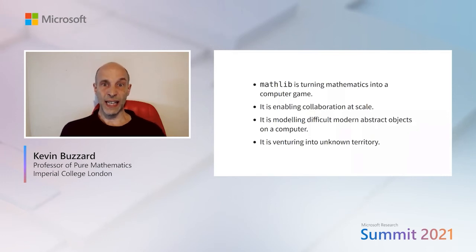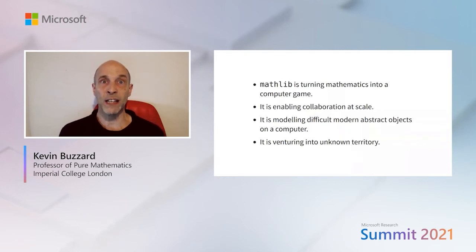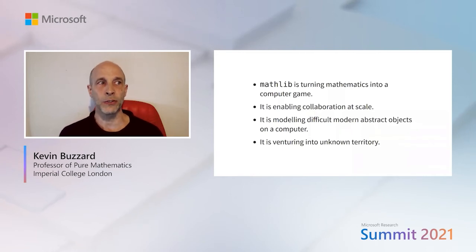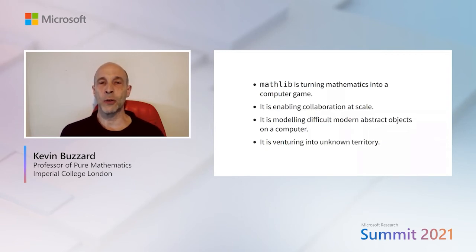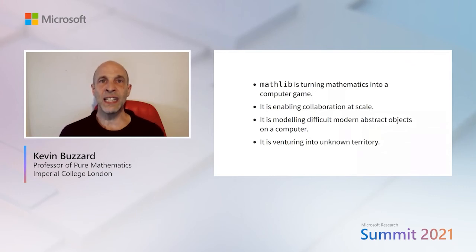To summarize: Lean's maths library Mathlib can turn mathematics into a computer game. The difference with Mathlib is it's engaging with research level mathematics and turning that into a computer game. It's also enabling collaboration at scale — many people can work on one project together using modern collaboration tools — and it's modeling difficult modern abstract objects on a computer. We don't really know where this is going, but this is like digitizing mathematics — something that hadn't been done before. It's taking us into unknown territory.